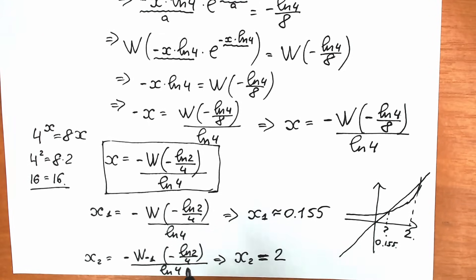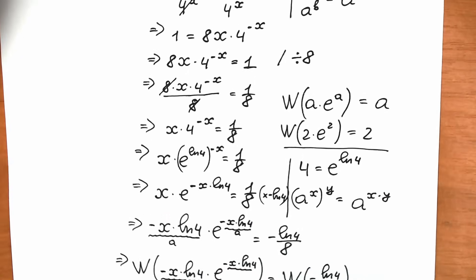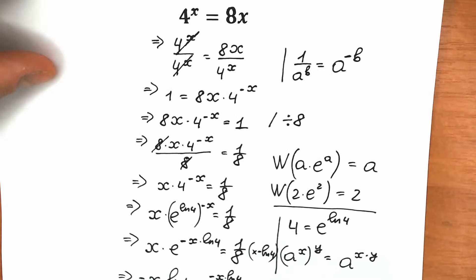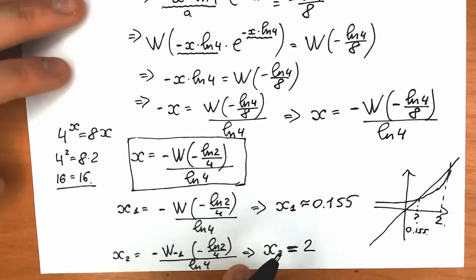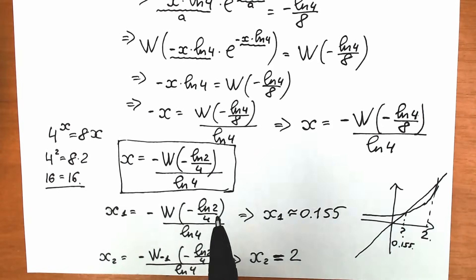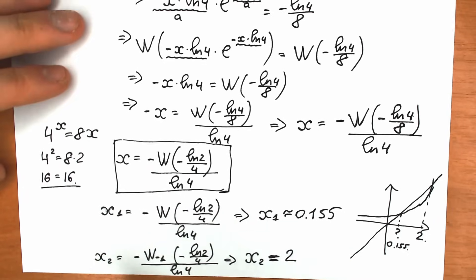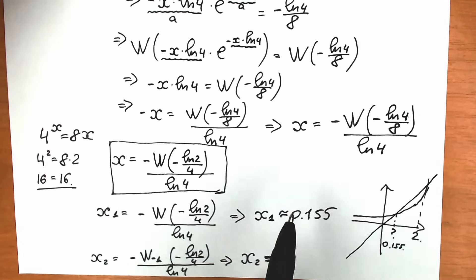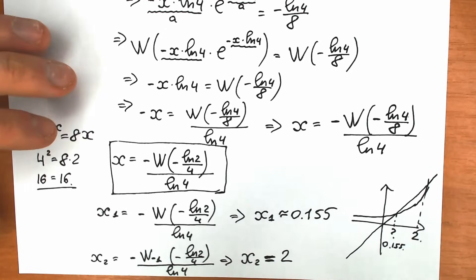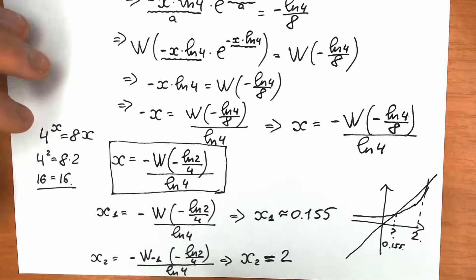This is the proof showing why we need to solve algebraically step by step. You can check x equals 2 by inspection, but to find both roots completely, you need to apply the Lambert W function. When a student solves this in only two or three lines and states x equals 2, that is incomplete. We have two real roots: x first approximately equals 0.155, and x second equals 2.